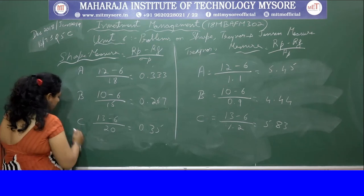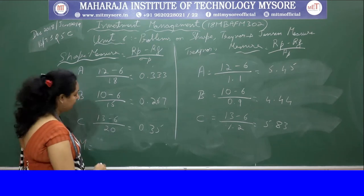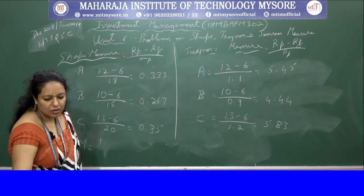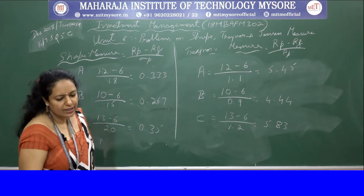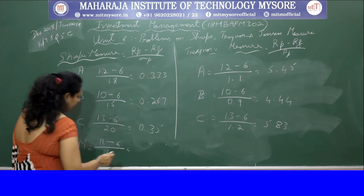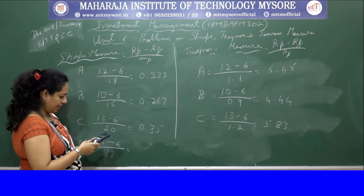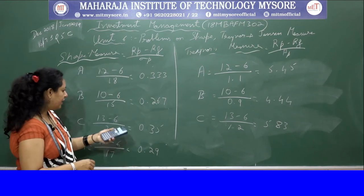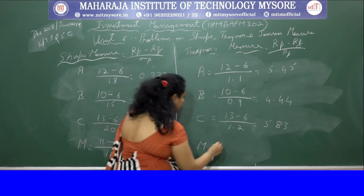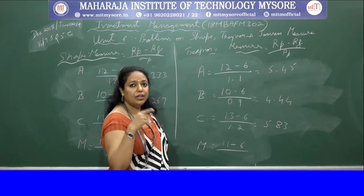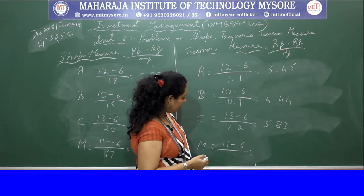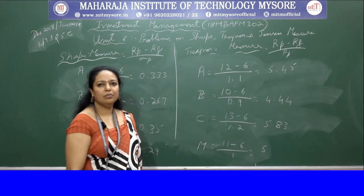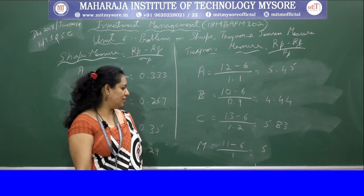For the market index: Sharpe's measure is 11 minus 6 divided by 17, giving 5 divided by 17 = 0.29. For Traynor's measure, beta of the market is always 1, so 11 minus 6 divided by 1 = 5.